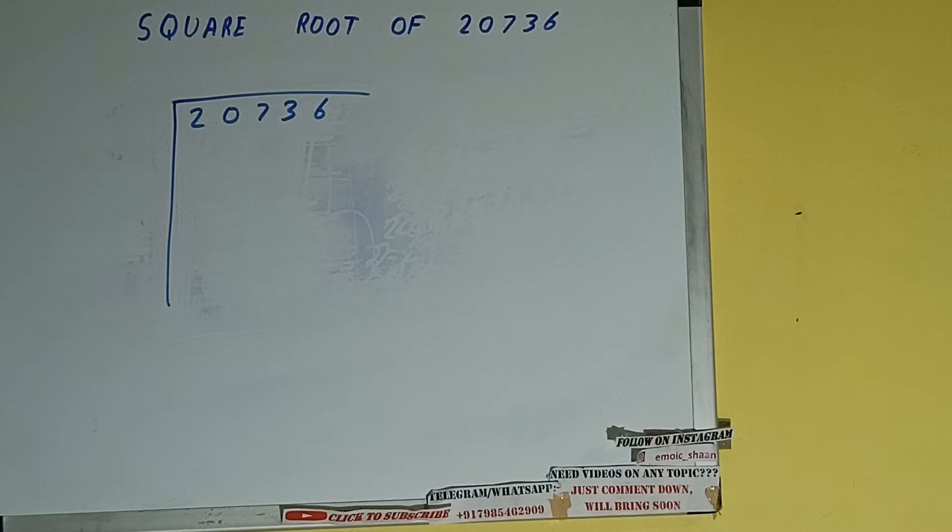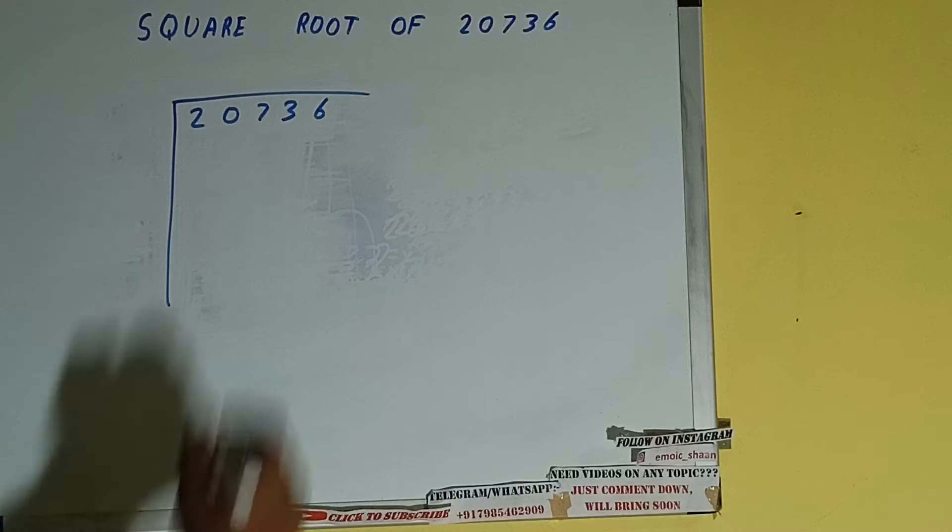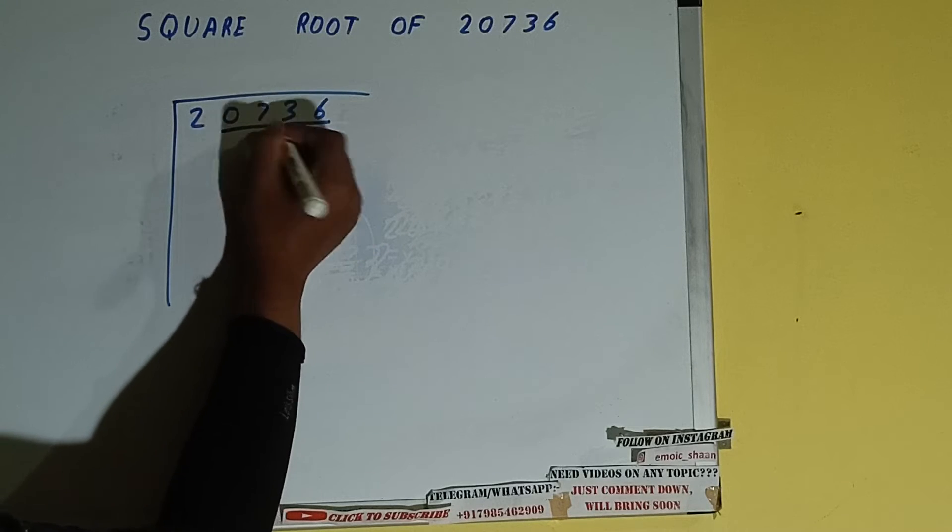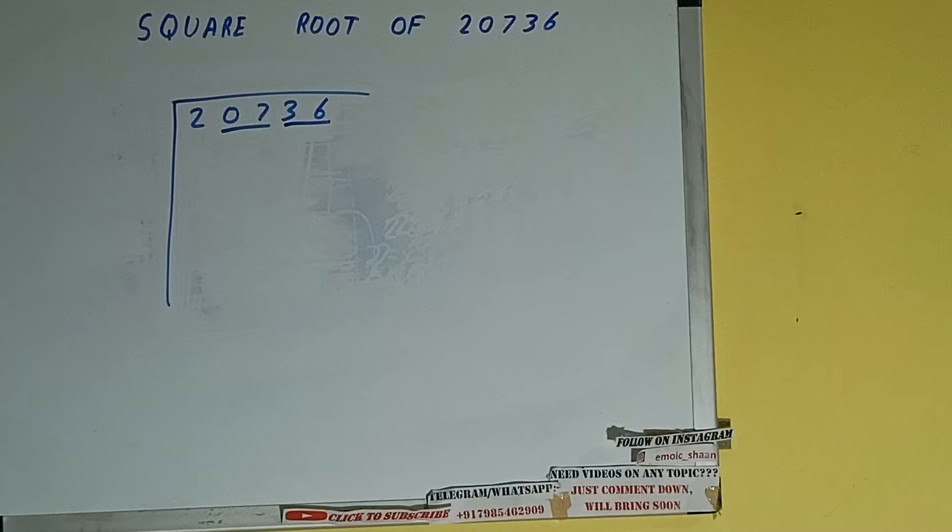Next thing we need to do is form pairs from the right-hand side. So one pair will be this, one pair will be this, and these two will be left out.